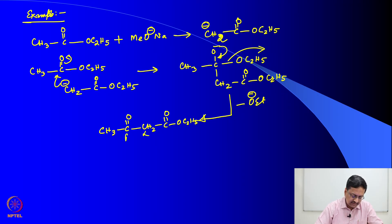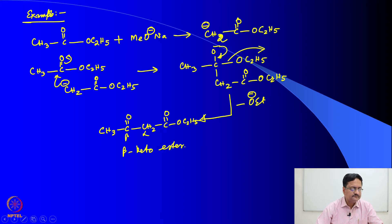This is alpha and that is beta, so it is the product — a beta-keto ester.